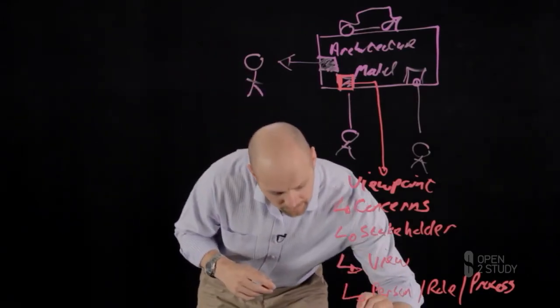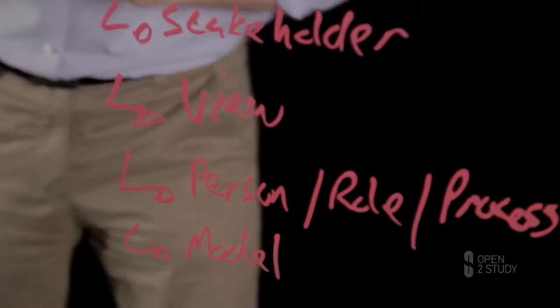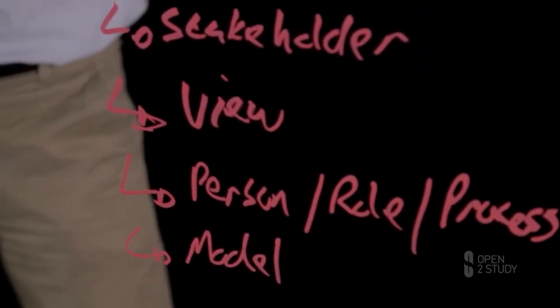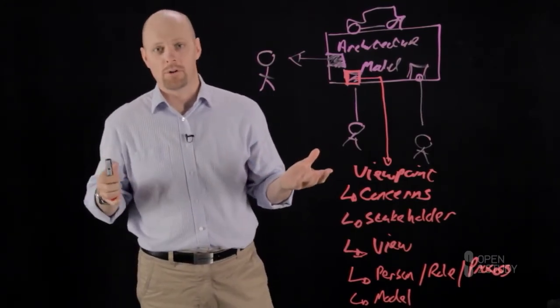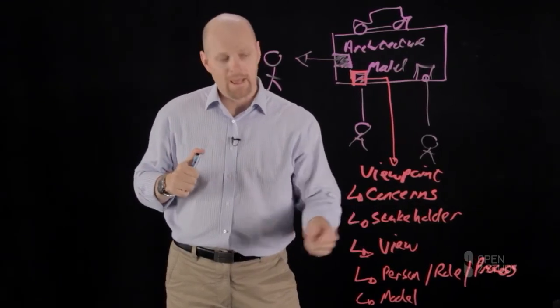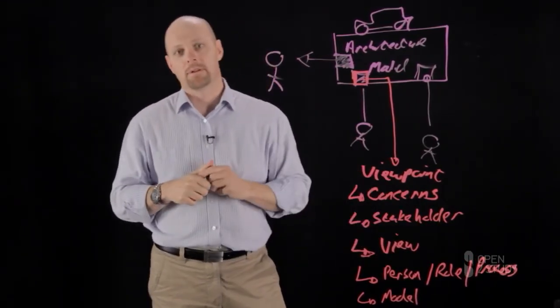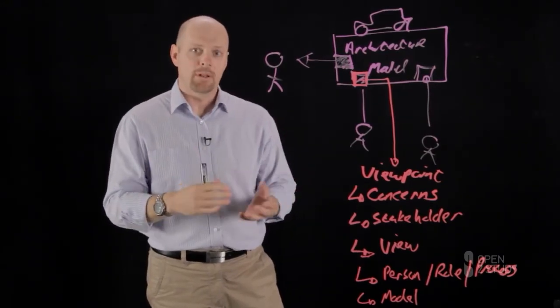Now, one of the other pieces just to close off on is, well, what model am I going to use to represent that? Well, in this case, it might be a business anchor model. It might be a process model. It might be a functional decomposition model. There's a variety of different types of models that you can use to be able to represent that view, assembling those business building block components together.